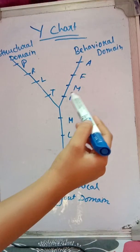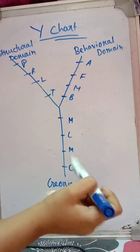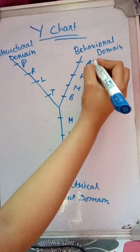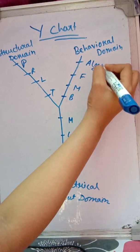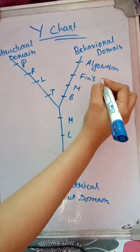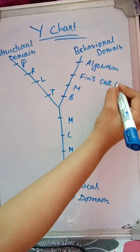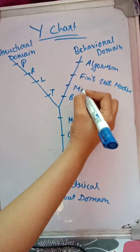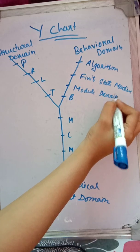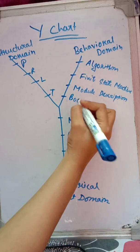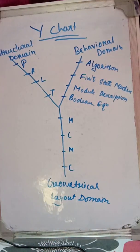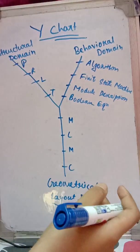Expanding the mnemonics: A is for Algorithm, F is for Finite State Machine, M is for Module Description, and B is for Boolean Equation. These are the four levels of the behavioral domain.